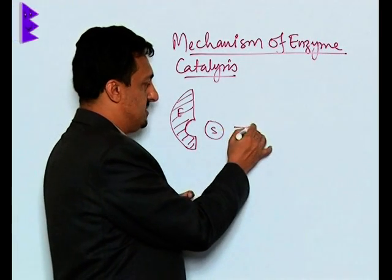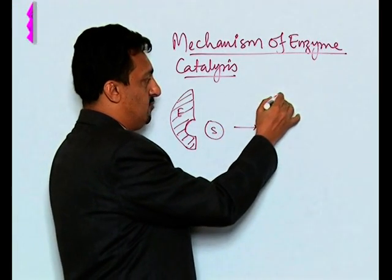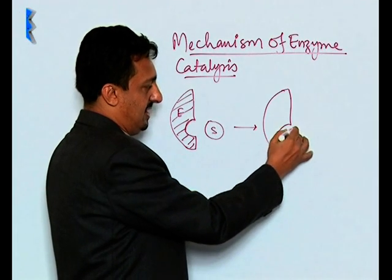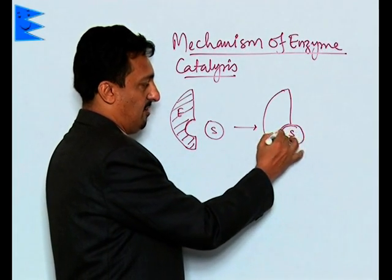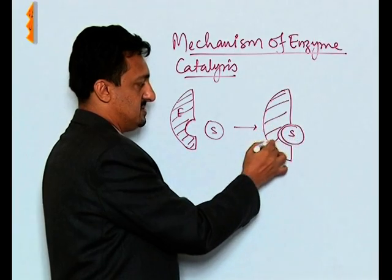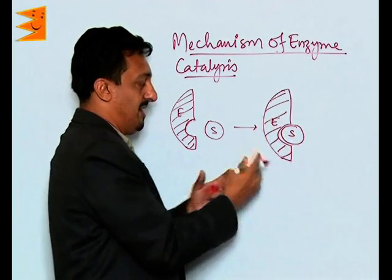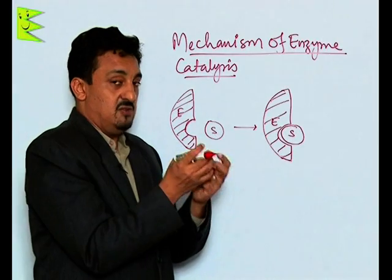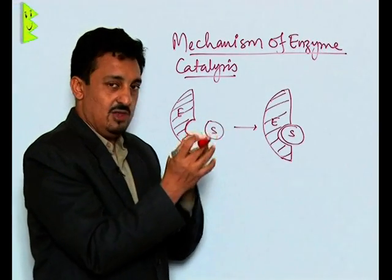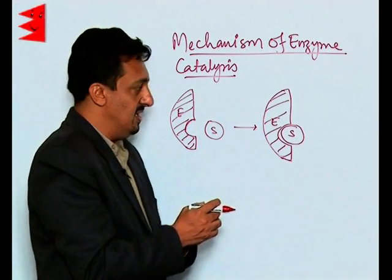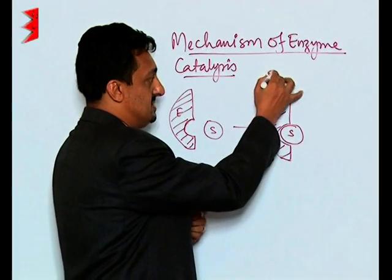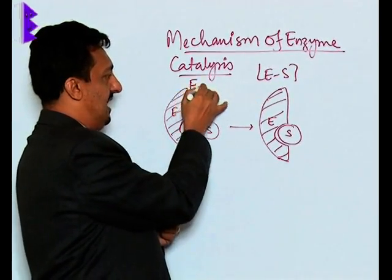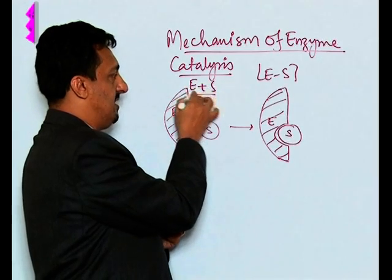As they come closer to each other, the substrate gets adsorbed onto the enzyme surface, due to the presence of those active sites which have certain functional groups through which it binds the reactant molecules. Then we say this enzyme-substrate complex is formed.